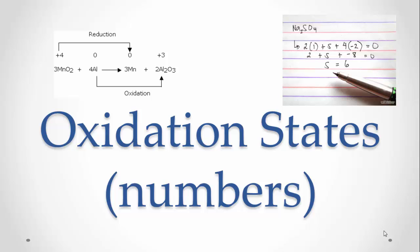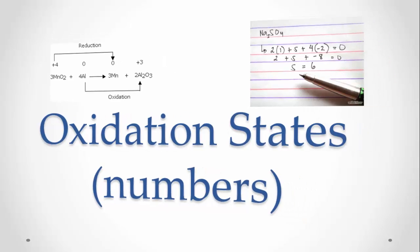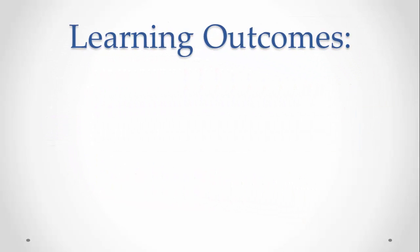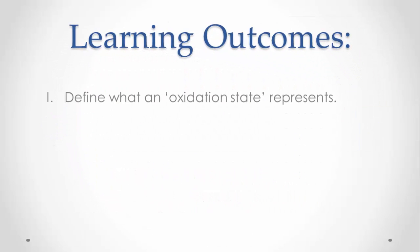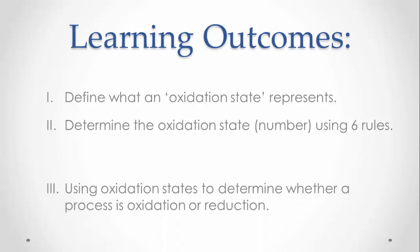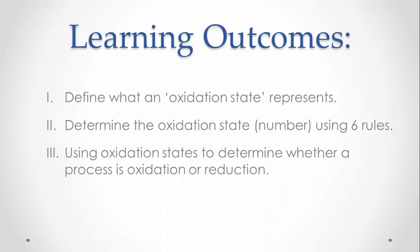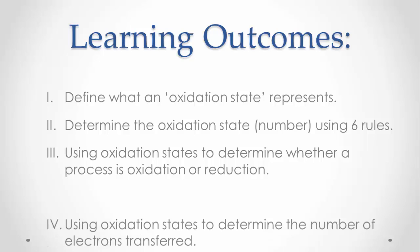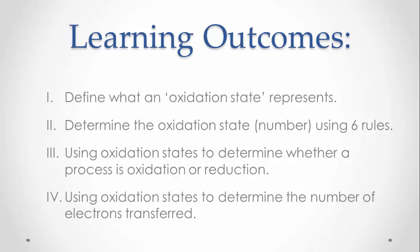Our learning outcomes for this presentation are: define what an oxidation state represents; determine the oxidation state or number using six rules; use oxidation states to determine whether a process is oxidation or reduction; and use oxidation states to determine the number of electrons transferred in a chemical change.